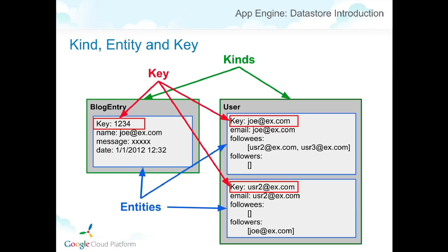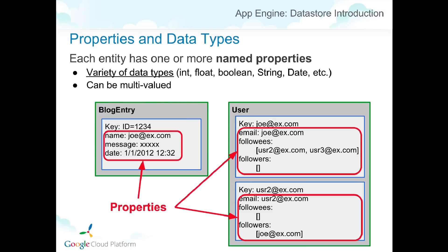Here's a real example: a blog application with social features. We have two kinds of data — a blog entry and a user. Each key is unique: one blog entry and two users, called entities. The properties are the actual data stored — for the blog entry, the name, message, and date are properties. User Joe has two followers, and that property has multiple values, which is different from an RDB where you'd use two separate tables. Also, a user with no followers is also valid. Datastore allows multiple values for one property and also allows empty data.